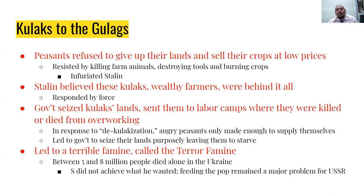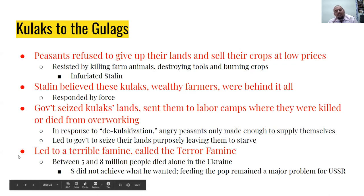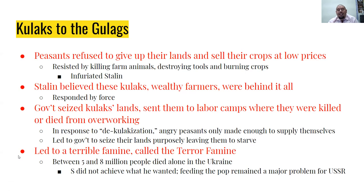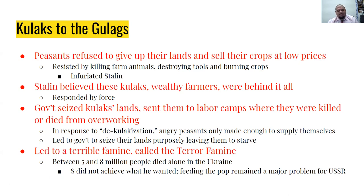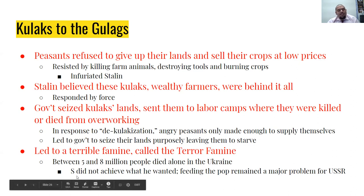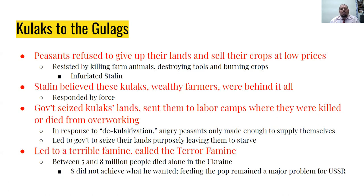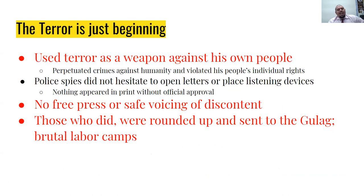In response to dekulakization, angry peasants only made enough to supply themselves and not the quantity the government demanded. That led to more government intervention, seizing their lands and purposely leaving them to starve. This led to a terrible famine across the Soviet Union called the Terror Famine. Between five and eight million people died in Ukraine alone. Ukraine — nicknamed the bread basket of the Soviet Union for its very arable land — suffered enormously. Despite all this, Stalin did not achieve what he wanted, and feeding the population remained a major problem throughout his reign.